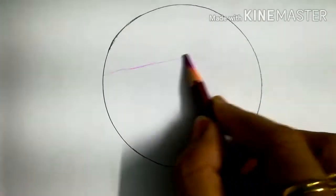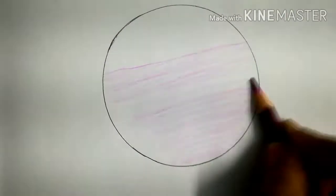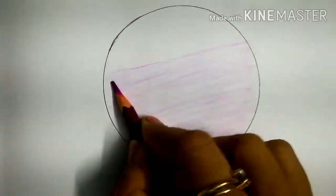Again we will fill the cytoplasm with the lilac color. Then we will draw the cells.